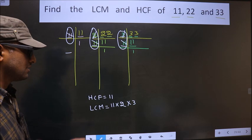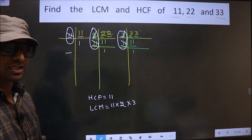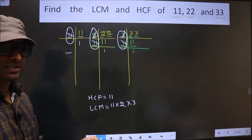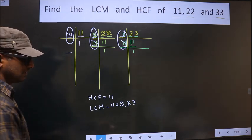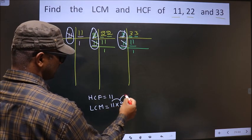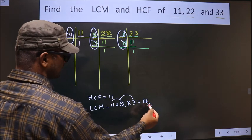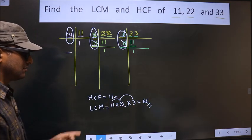So the LCM is, now you multiply these numbers. Whatever number you get, that is your LCM. So let us multiply. That is 11 into 2, 22 into 3 is 66. So this is our LCM and this is our HCF.